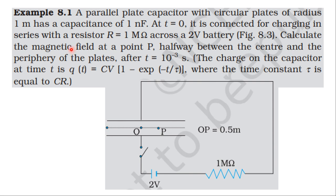From NCERT textbook, from the topic electromagnetic waves, example 8.1: A parallel plate capacitor with circular plates of radius 1 meter has a capacitance of 1 nanofarad. At time t equal to 0, it is connected for charging in series with a resistance R equal to 1 megaohm across a 2 volt battery. Calculate the magnetic field at a point P between the center and the periphery of the plates after t equal to 10 power minus 3 second.